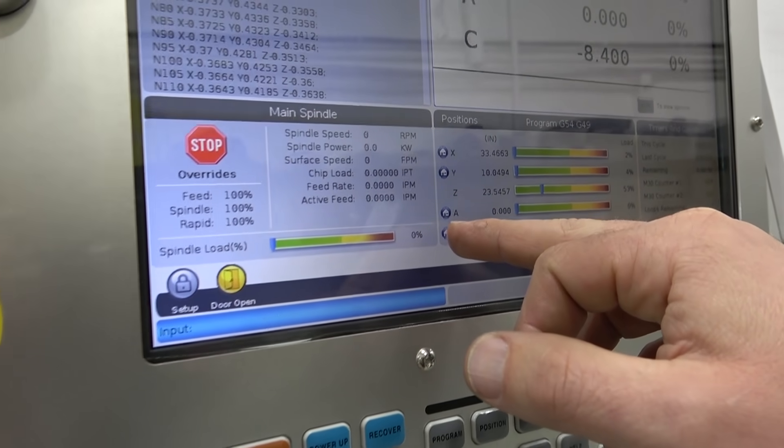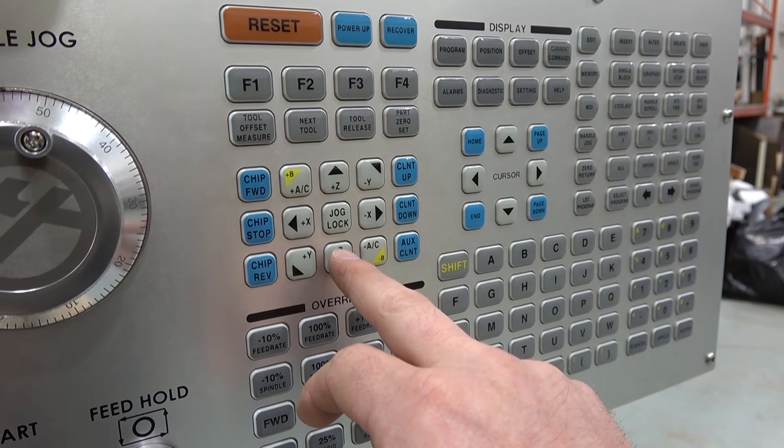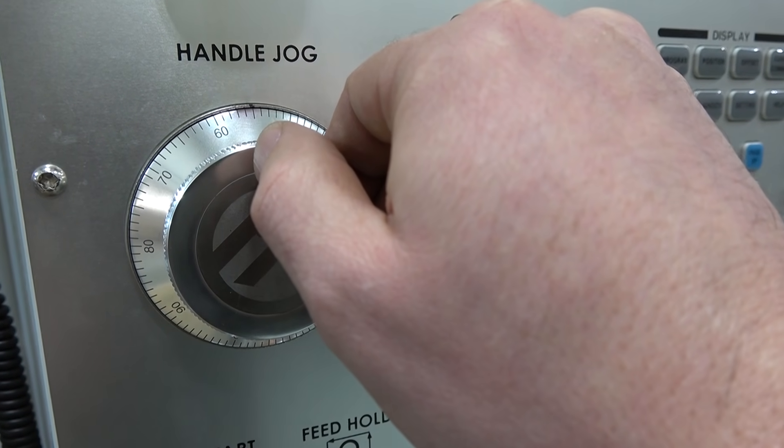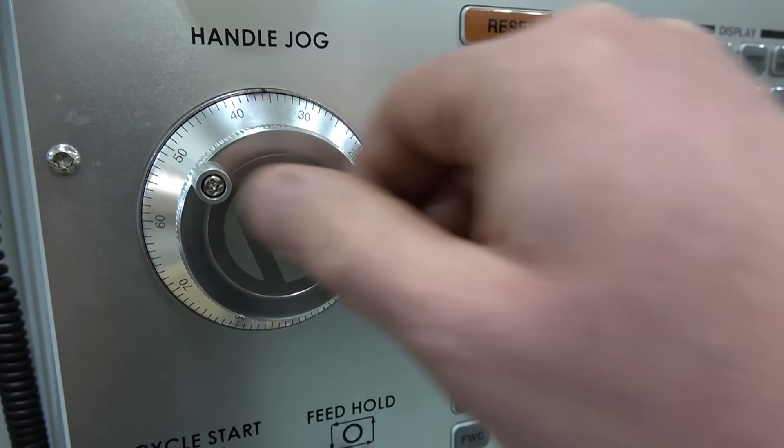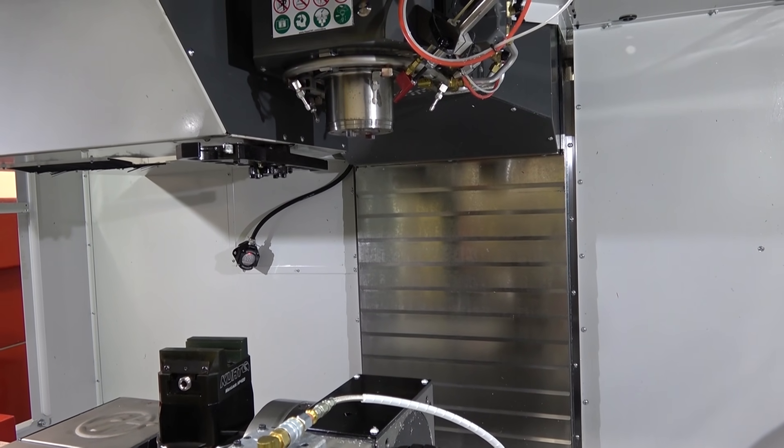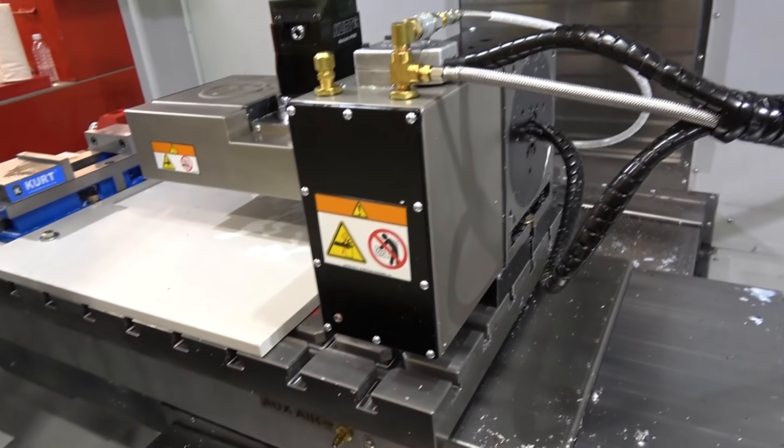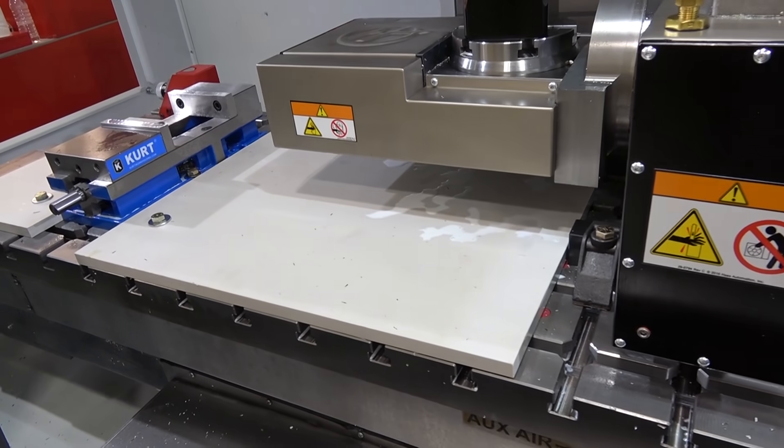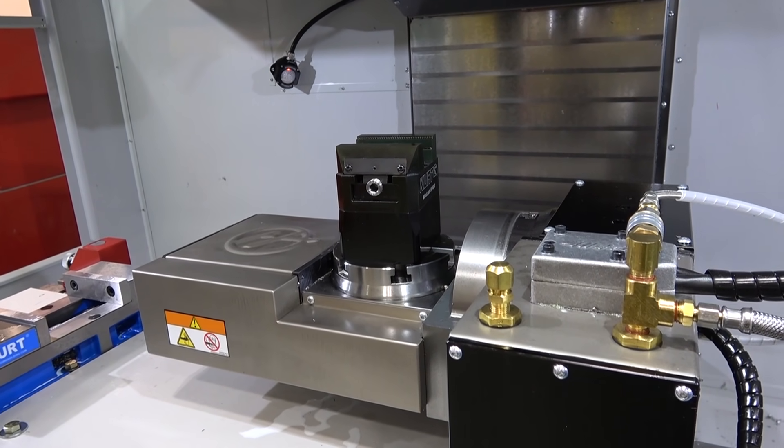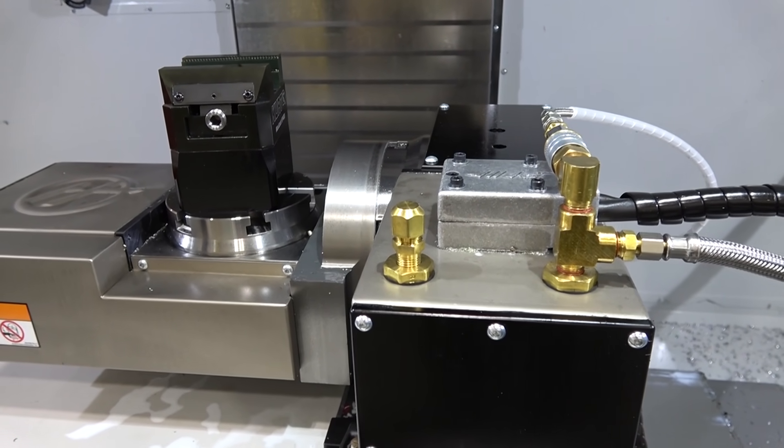So this is our handle jog, this is our main input for moving the thing around, jogging it around. We hit handle jog, it tells us the axis A and C aren't zeroed so we'll close the doors and then we'll hit zero return all. Now you see every axis is home by the little pictograph of a cute little house. Now we go to handle jog and then we select the axis we want to jog. This hand jog is positive in the clockwise direction and negative in the anti-clockwise direction. It's good to think about before you put your hand on the jog wheel, it's good to think about which direction you're actually going to move.